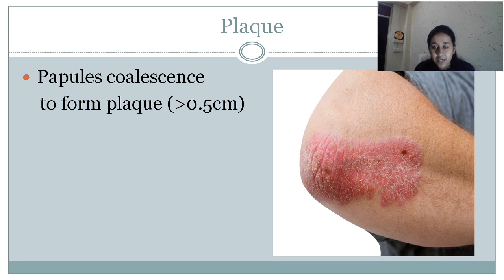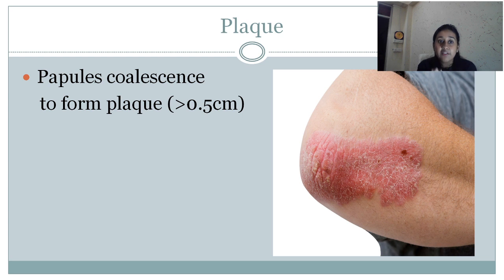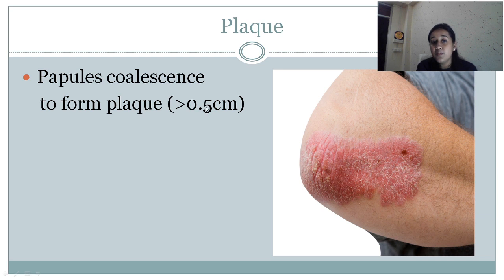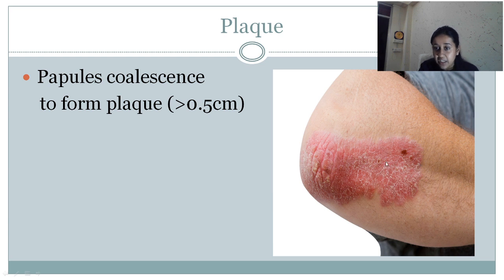Next is plaque. What is a plaque? When several papules come and join together, they form a plaque. So a papule coalesces to form a plaque and the size is more than 0.5 cm. Look at this picture — this is a picture of an elbow of a patient which has a plaque, showing small multiple papules joined to form a plaque.